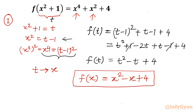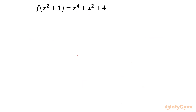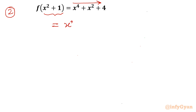Now approach number 2 using algebraic manipulation. What I will do here is frame the right hand side entirely in terms of x² + 1, and then replace x² + 1 with u at the end. I can write x⁴ as (x²)².